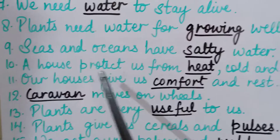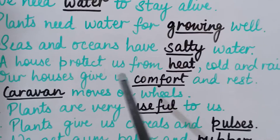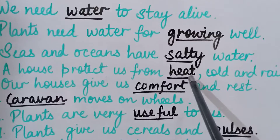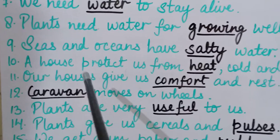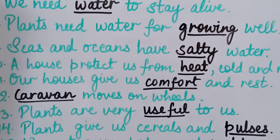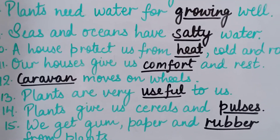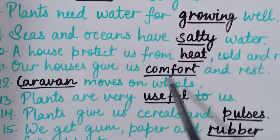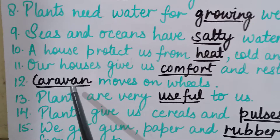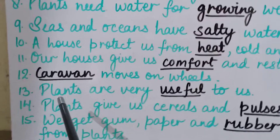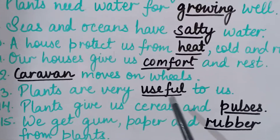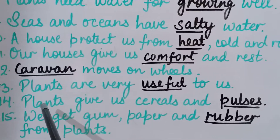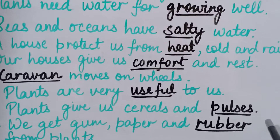Tenth sentence: A house protects us from H-E-A-T, heat, cold and rain. Eleventh sentence: Our houses give us comfort and rest. Twelfth sentence: C-A-R-A-V-A-N, caravan, moves on wheels. Thirteenth sentence: Plants are very useful to us. Fourteenth sentence: Plants give us cereals and P-U-L-S-E-S, pulses.